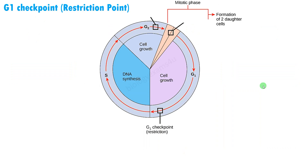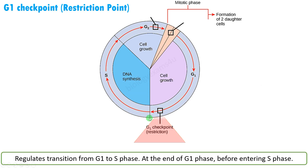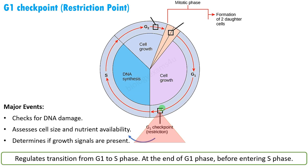Now let us see the G1 checkpoint and how it is regulated. It is also called the restriction point. It regulates the transition from G1 to S phase — at the end of G1 phase before entering S phase. This checkpoint ensures whether there is any DNA damage, assesses cell size and nutrient availability, and determines if growth signals are present.